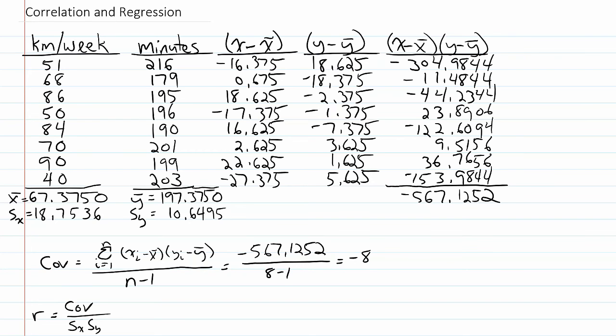And with that, I get negative 81.0179. Now, I can just use this covariance and the product of my standard deviations to compute the correlation. I get negative 81.0179 divided by 18.7536 times 10.6495, and that gives me negative 0.4057.